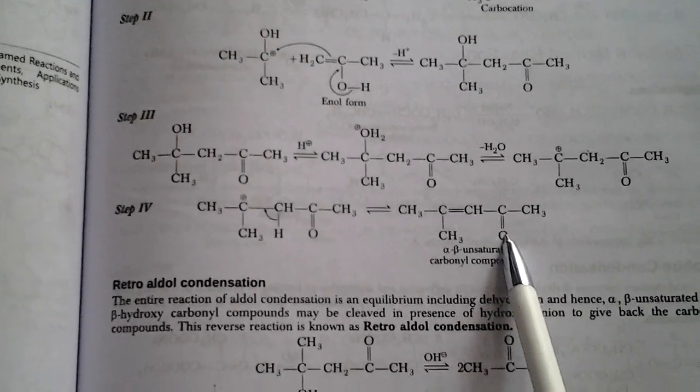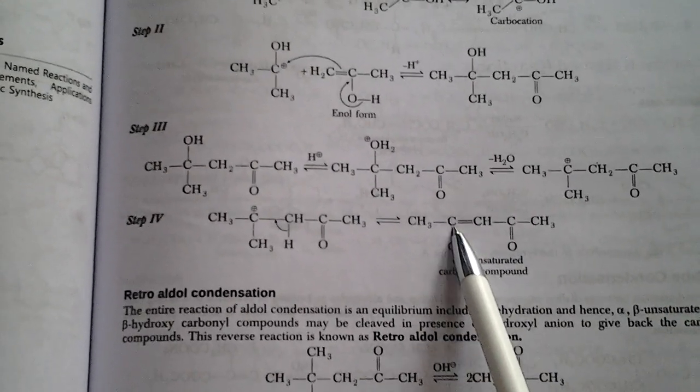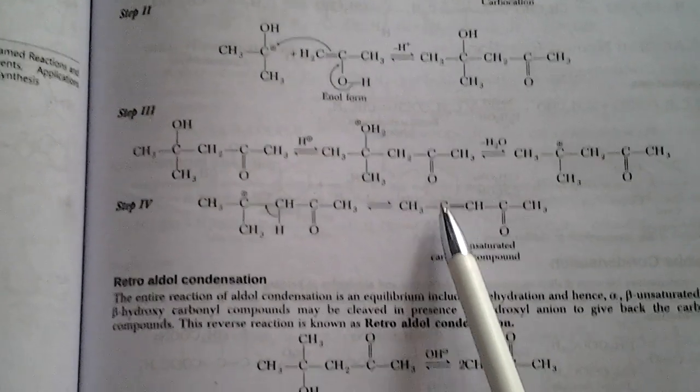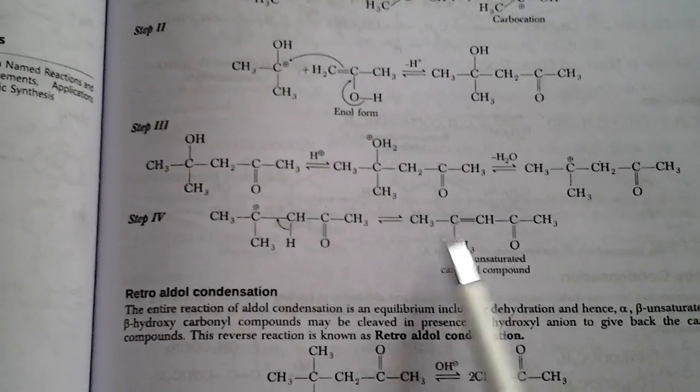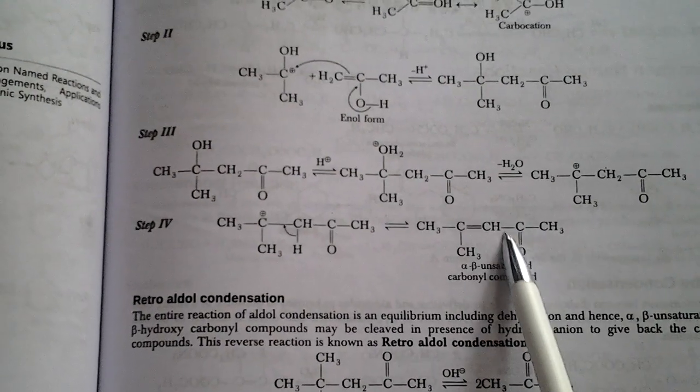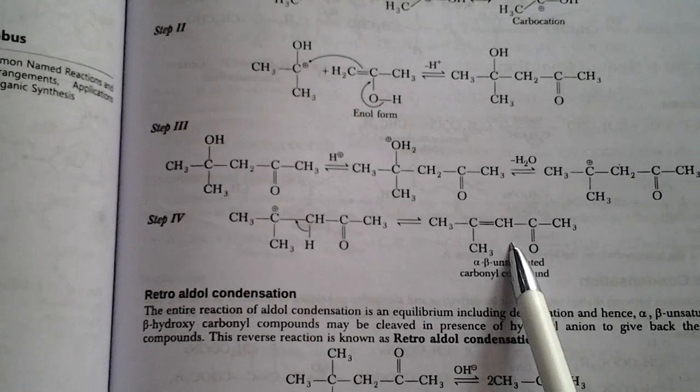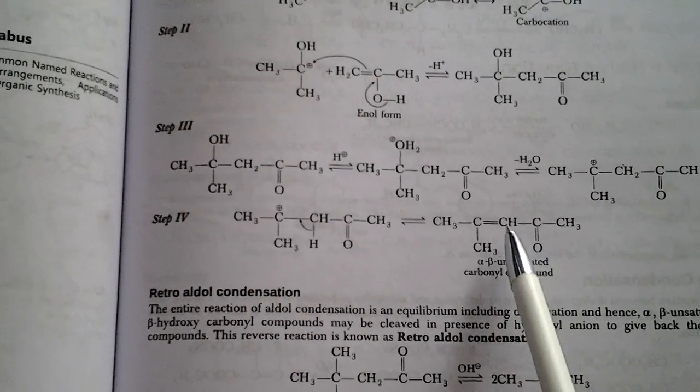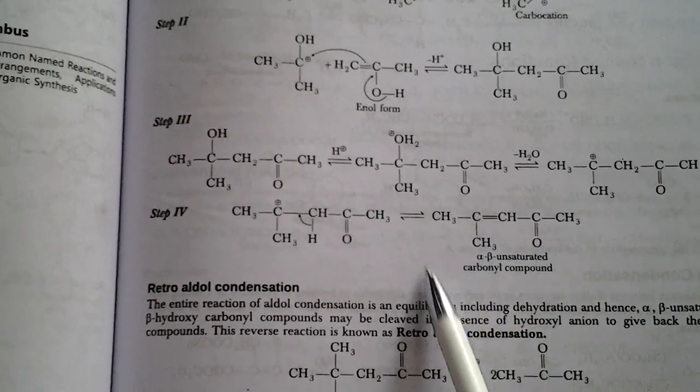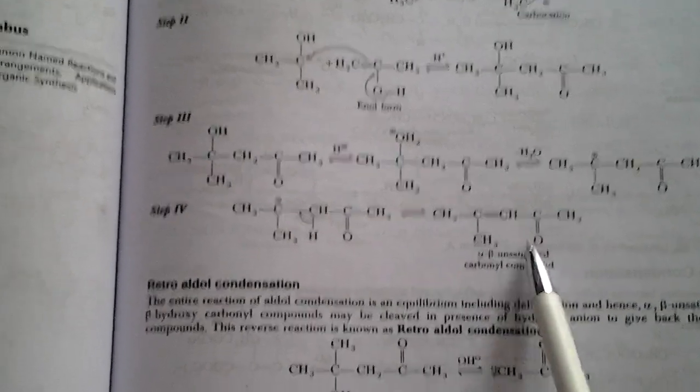See: functional group, alpha position and beta position. Alpha-beta unsaturated carbonyl compound. The carbonyl compound may be an aldehyde or a ketone. Here, we are taking ketone. Thereby, alpha-beta unsaturated carbonyl compound is formed.